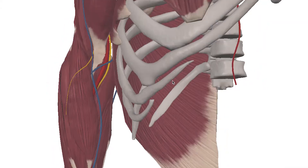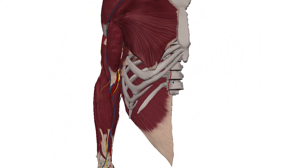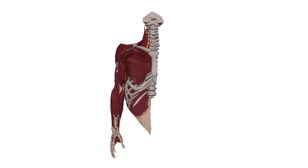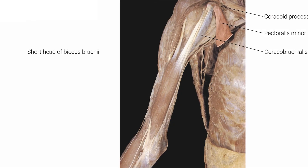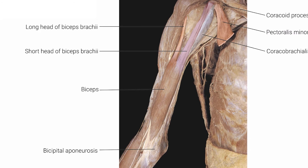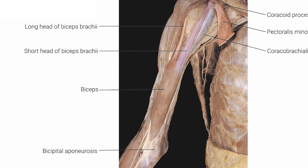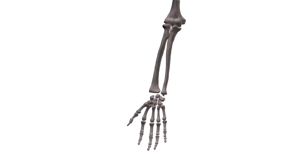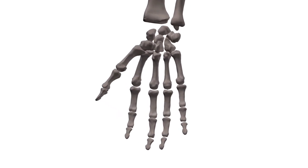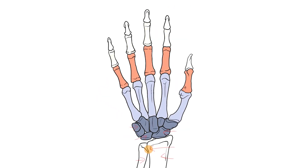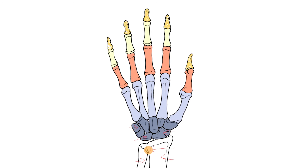In this course, we will focus on the upper limb. The upper limb is attached to the trunk and is divided into three segments. The first or proximal segment extends from the shoulder to the elbow and is called the arm. The second segment, or forearm, spans from the elbow to the wrist. And distal to the wrist, we have the third and final segment, the hand.